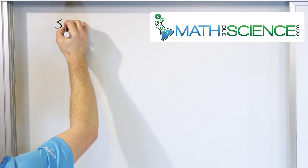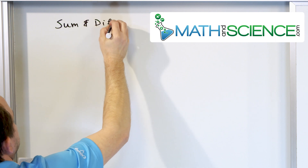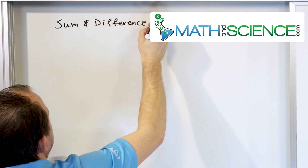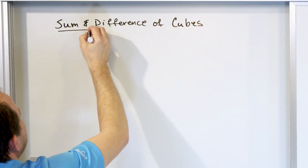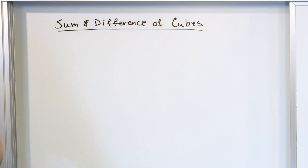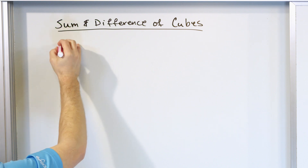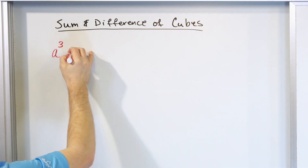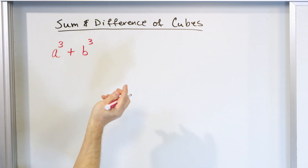What we're covering is called the sum and the difference of cubes. I'll write them both down and prove them to you — show what they actually equal and why they work. Then we'll work a few quick problems to show how to use them. Basically, if you have some term A cubed added to some term B cubed, this is called the sum of two cubes.